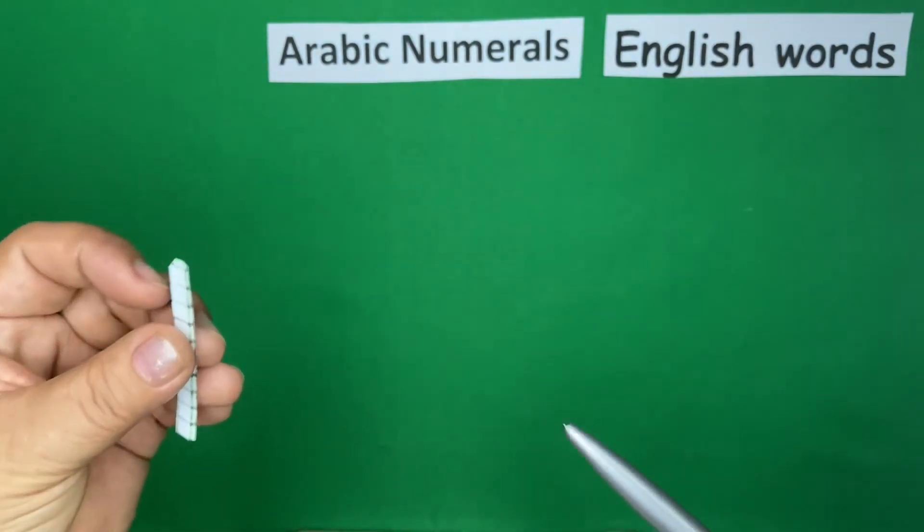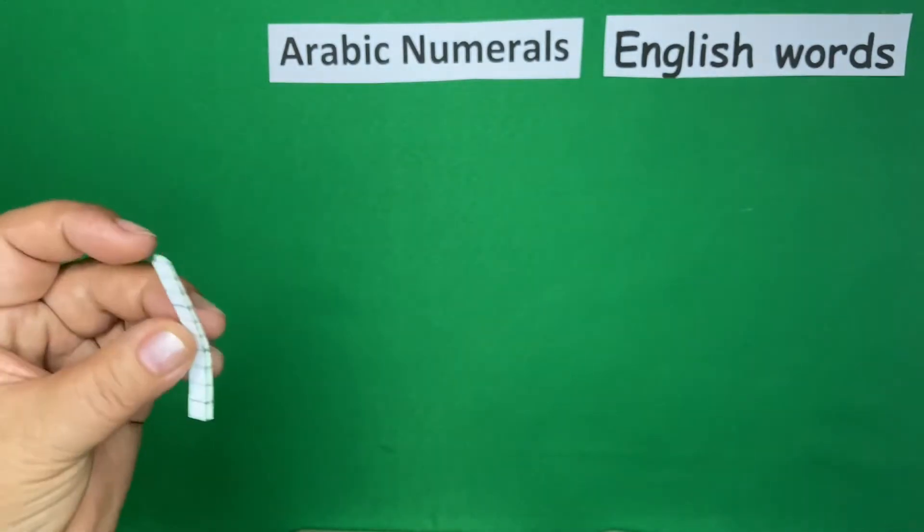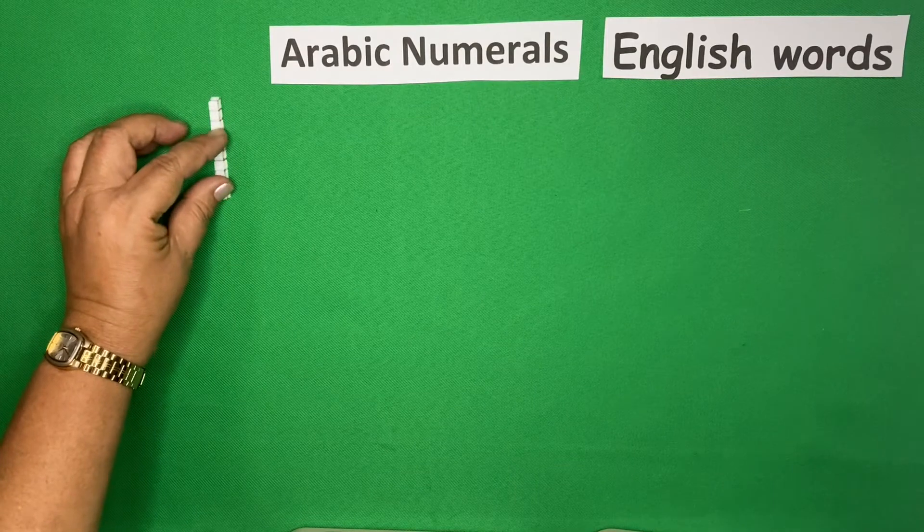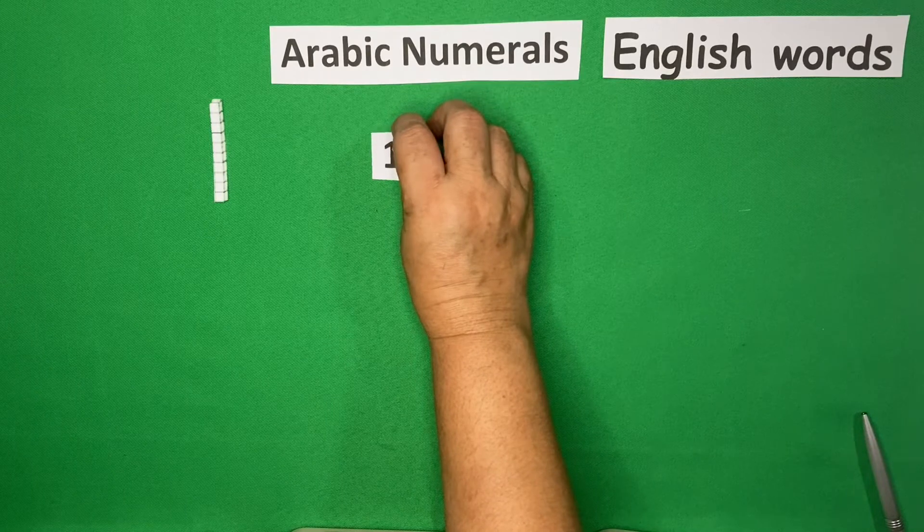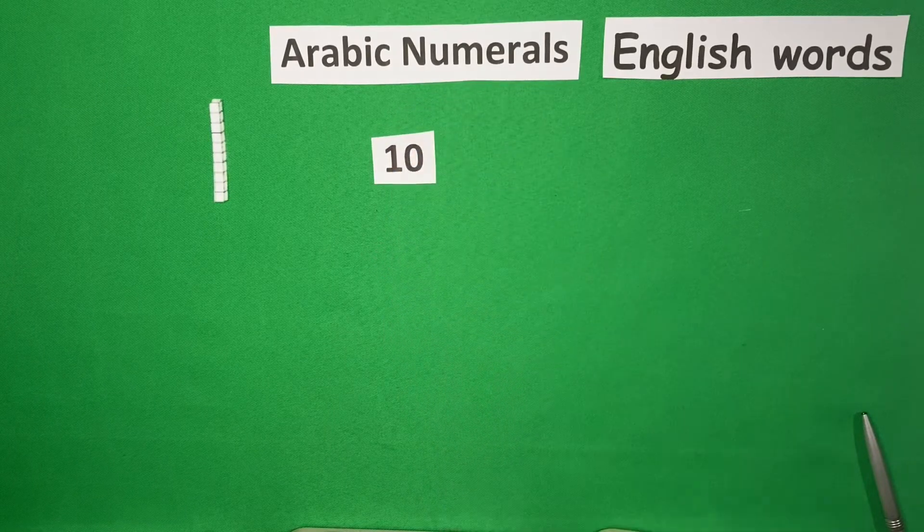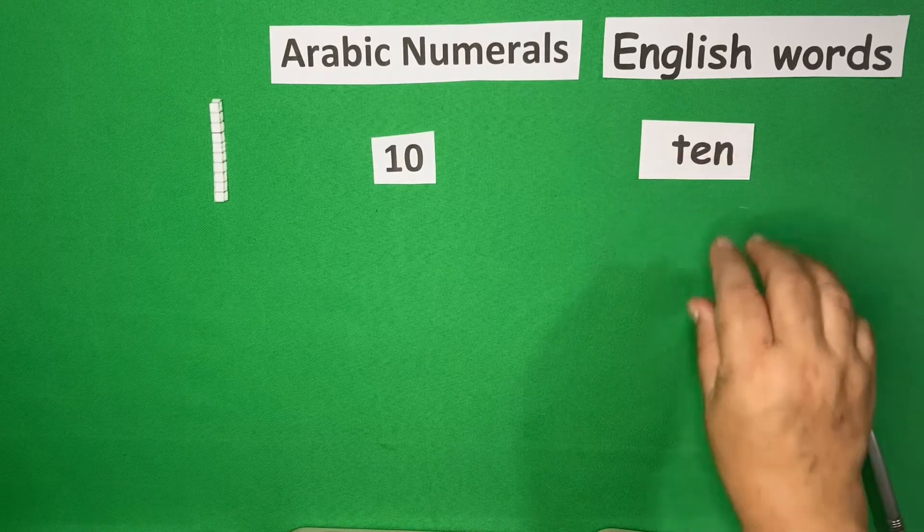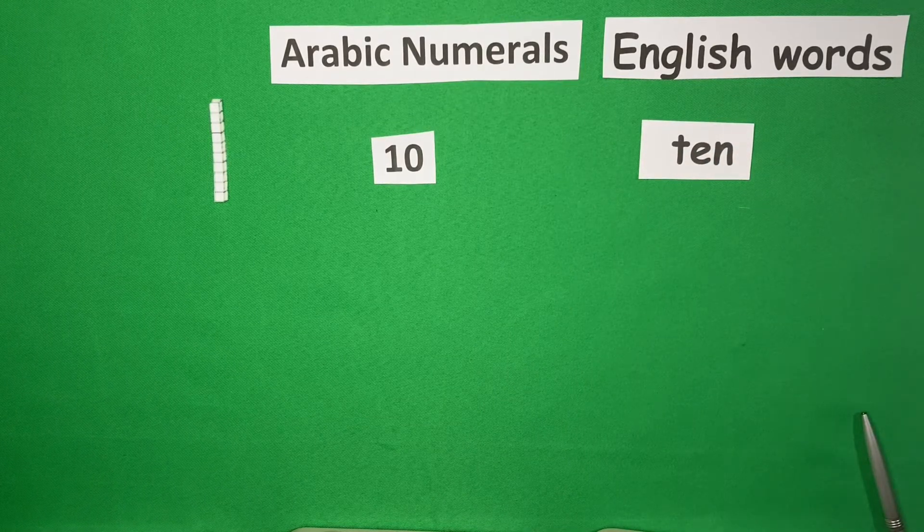There are 10 blocks together. So, this is the figure of 10 blocks. And in Arabic numerals, this is 10. And in English words, this is ten, T-E-N.